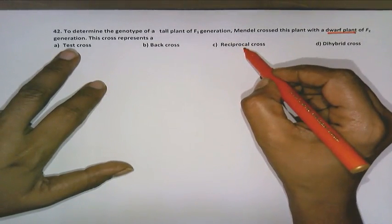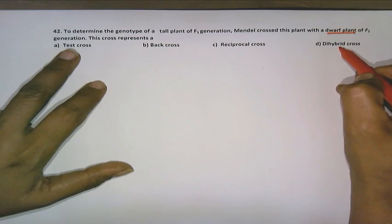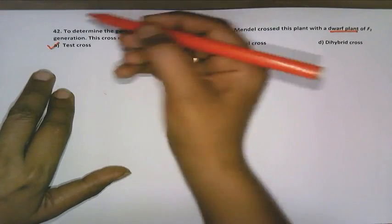If you are moving on to reciprocal cross, definitely it is not reciprocal cross. And tall and dwarf is not a dihybrid cross. So the option is option A. Thank you.